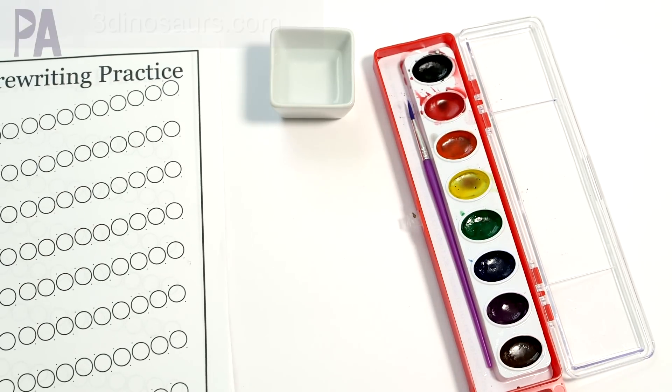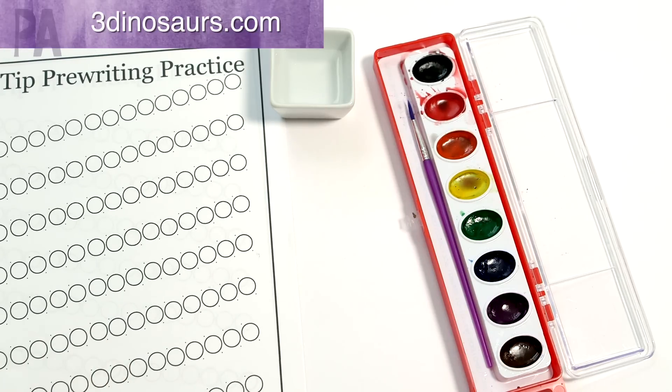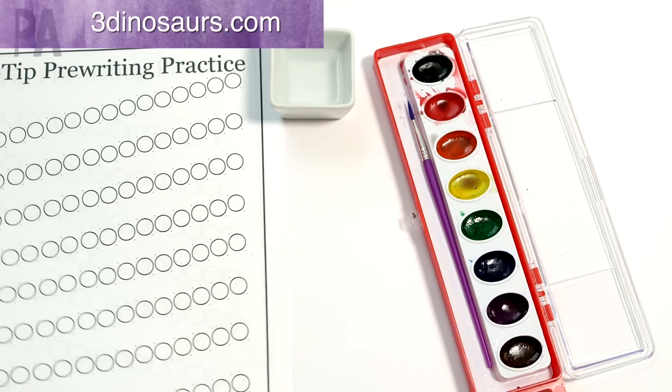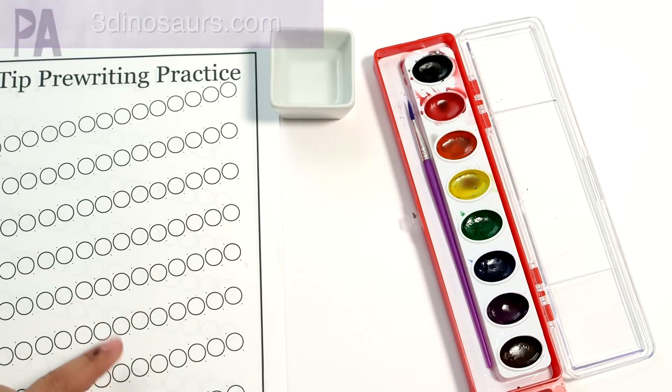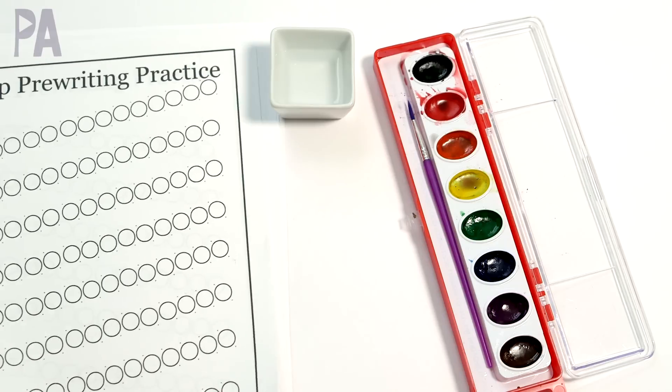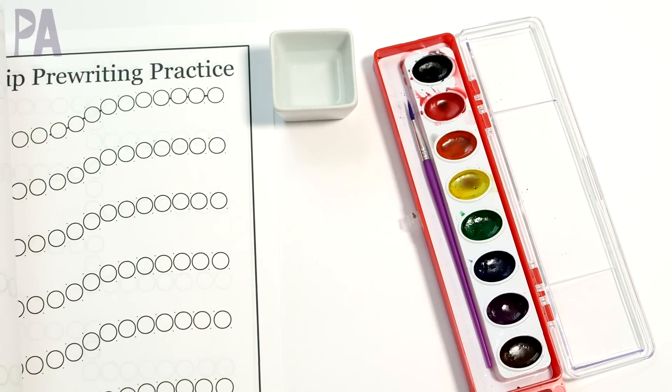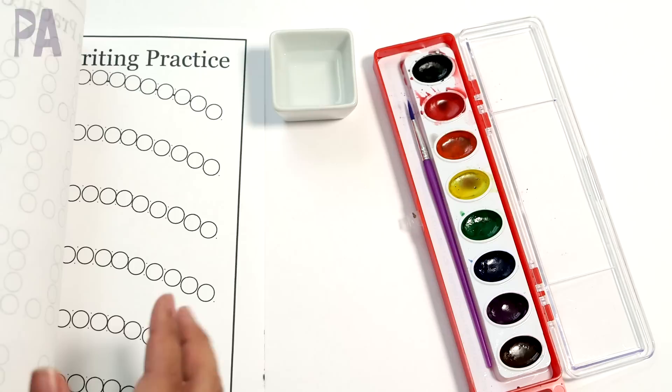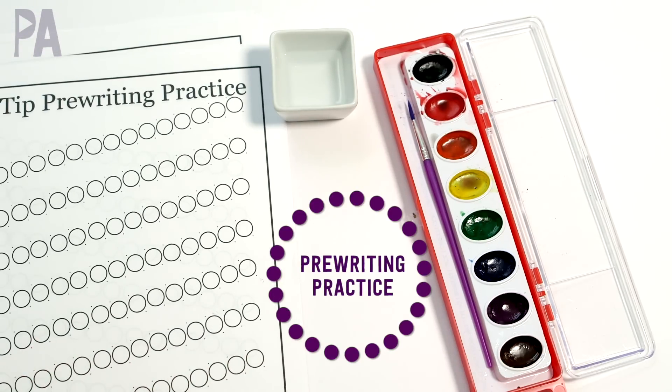So the first set of sheets I have for you are from 3D Dinosaurs. I think I've shown these to you before, but in the doodot marker, so it's very similar. It's Q-tip pre-writing practice, so the little dots are smaller than you would use for the doodot sheets, and there are several different sheets here, all different patterns, different shapes and things like that, so you would just pick one of these, or two of these, or however many you want to do.